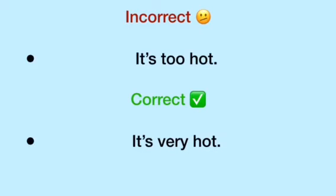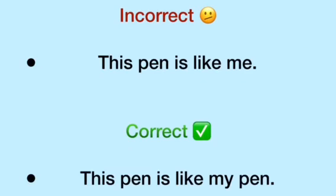Next: 'This pen is like me.' No. The correct sentence is: 'This pen is like my pen.' Yes, that is correct.